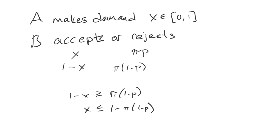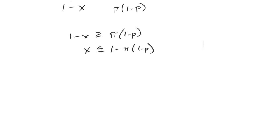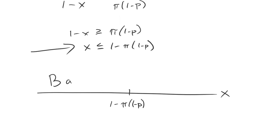And so if we think about what A should do, A can divide the pi in one of two different ways based off of what we just learned about here. So let's think about the different X choices that A can make. If it chooses something to the left of 1 minus pi times 1 minus P, then we have B accepting, as long as it's to the left of it.